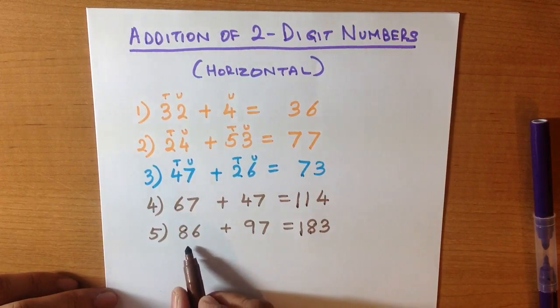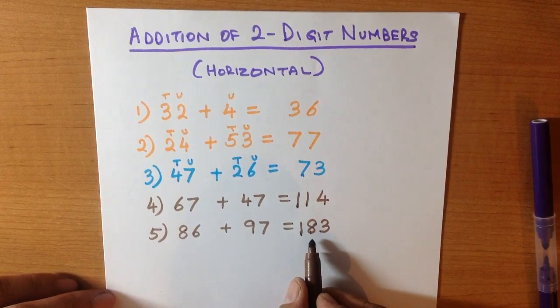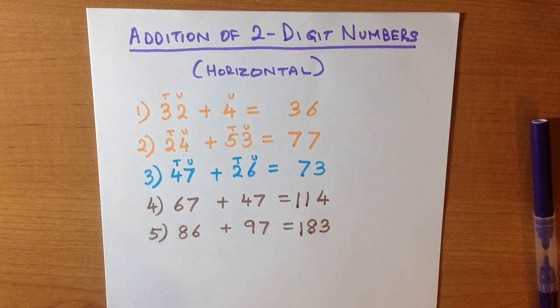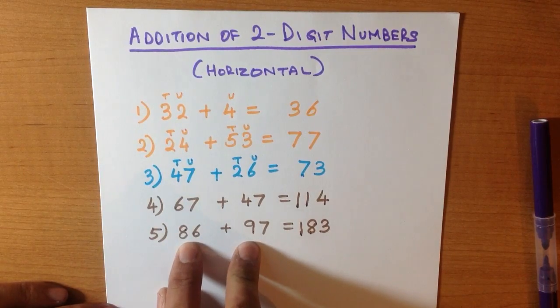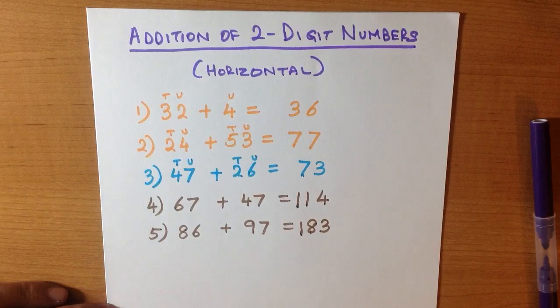Now have you noticed? 86 plus 97 is equal to 183, and we did that using the horizontal format. So don't be frightened by the numbers. Practice a few of these numbers by yourself and practice them to such a level where you can actually just look at the numbers and work out the answer without having to write anything. It is as simple as that.